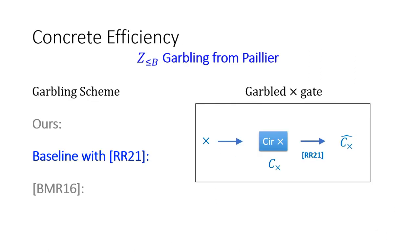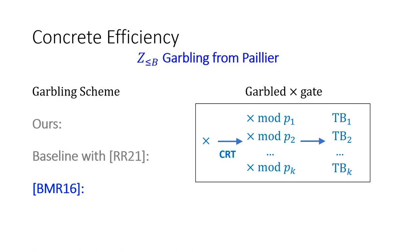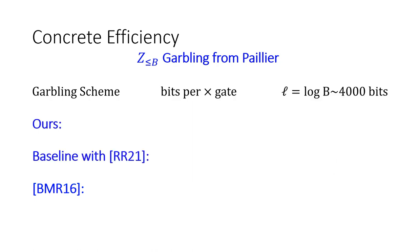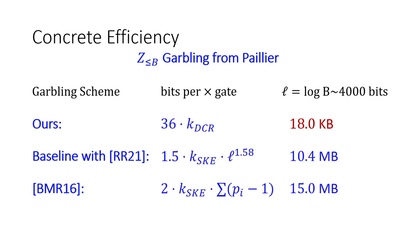Garbling the bit decomposition gate is more expensive, with rate shown on the slides. For concrete efficiency, we compare our Paillier-based scheme with the baseline Boolean garbling approach and with BMR16, which uses the Chinese Remainder Theorem to break multiplication over large integers into multiplications modulo small primes p1 to pk and garble them individually. In a concrete setting with L roughly 4,000 bits, our scheme requires only 18 kilobytes to garble a multiplication gate.